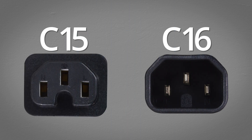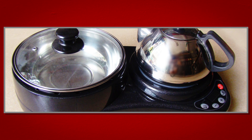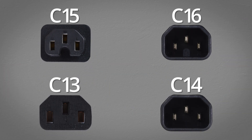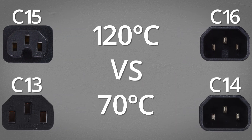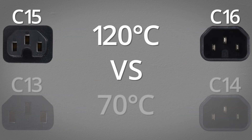C15 and C16 can be found on appliances that generate a lot of heat. They have a similar form factor to the C13 or C14 but with a small notch underneath the ground. They also feature a higher temperature rating, making them ideal for higher draw equipment.